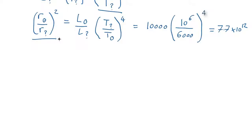So we've got a square here, so let's take the square root of both sides of the equation. We therefore find that R_sun/R_mystery is equal to the square root of this, which comes out as 2.8 × 10^6.